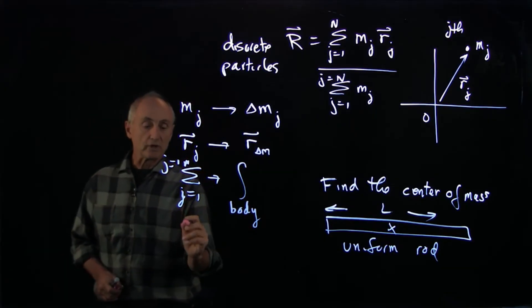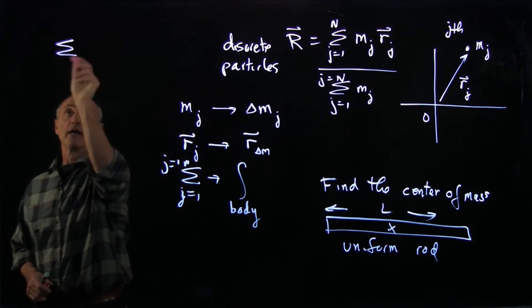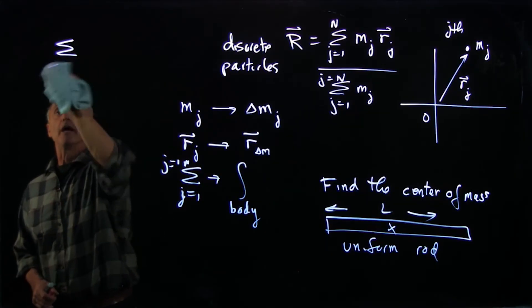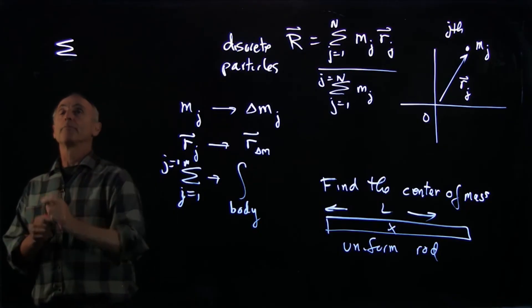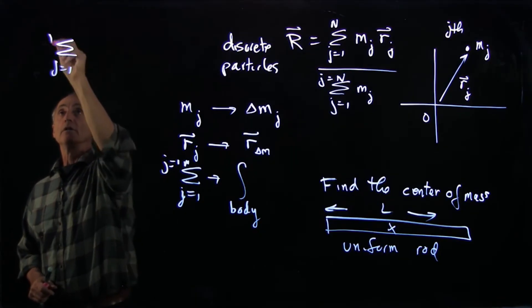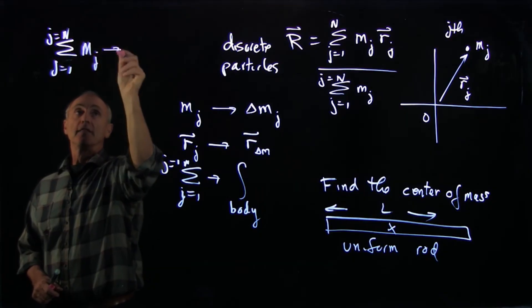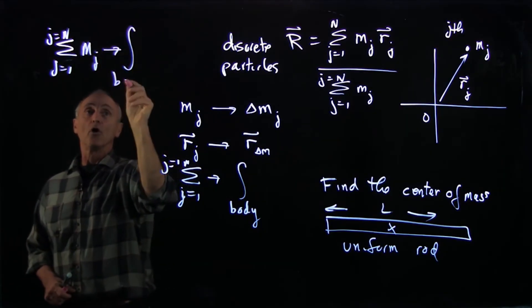First, we'll do it with the total mass, m. Here we're summing over j from 1 to n of mj. That goes to the integral over the body.